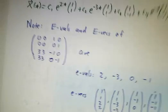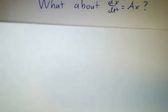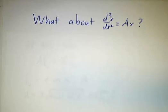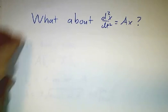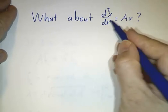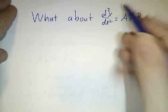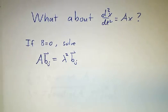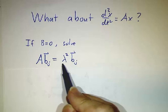Okay, last point is what about the equation second derivative equals Ax that we learned how to solve a while ago? How does all this formalism work for this particular problem, which we already know how to solve? Well, if B is 0, then our equations just become Ab equals lambda squared b.